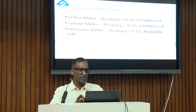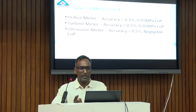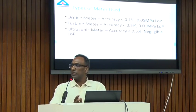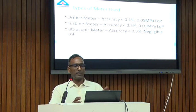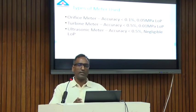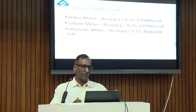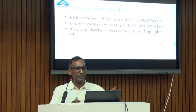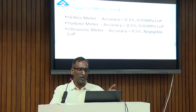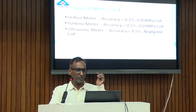There are three types of meters defined: orifice, turbine, and ultrasonic. Accuracies are different in all the meters. We have three different Indian standards available on all types of meters: IS 15675, IS 15674, and IS 15673. All are product standards.